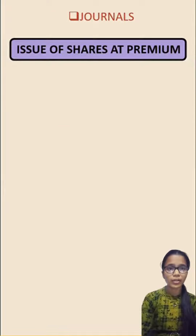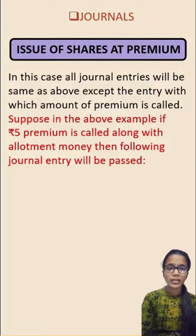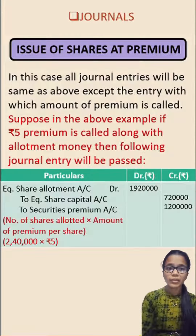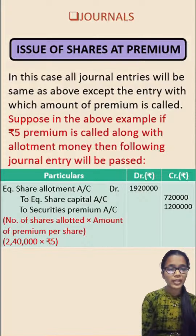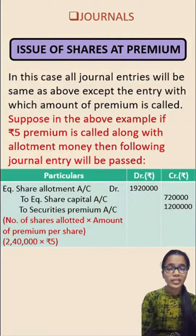Suppose, in the above example, Rs. 5 is called along with allotment money. Then the entry would be equity share allotment account debited Rs. 19,20,000 to equity share capital account Rs. 7,20,000 and to securities premium Rs. 12,00,000, and all the rest of the entries will remain the same.